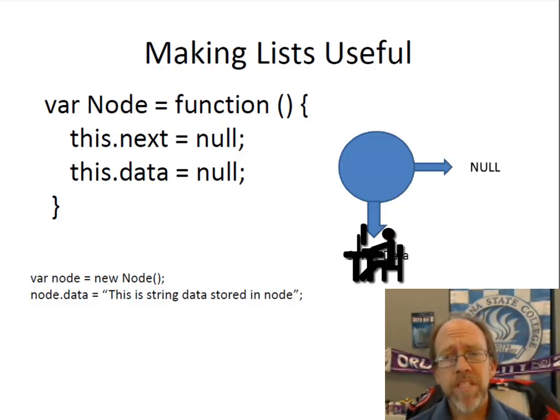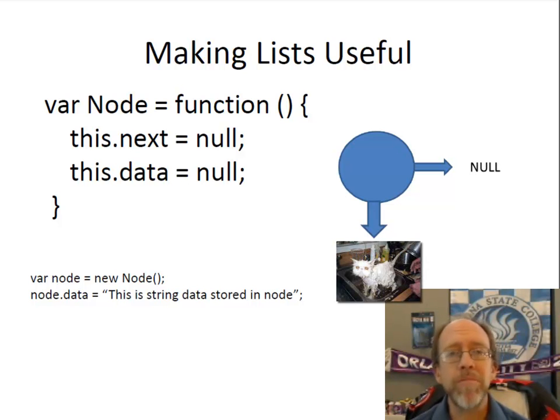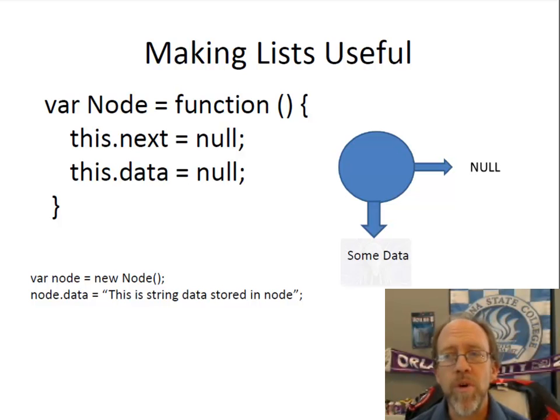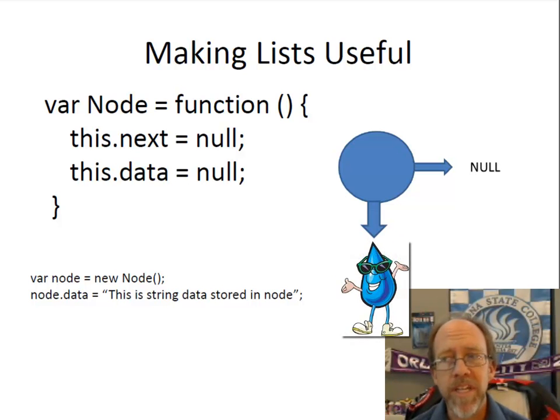In JavaScript, this data, anything in JavaScript is an object, so this data could actually be a function, or it could be another object, or it could be a collection of objects, or it could be another list, or it could be an array. All those things can be stored inside the data of the node. And so you have this ability to link these things together and store stuff inside of them and be able to progress from one to the other.